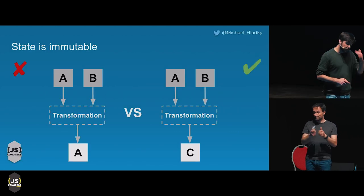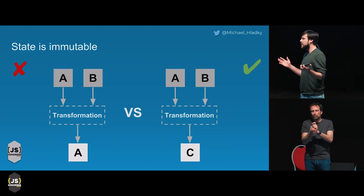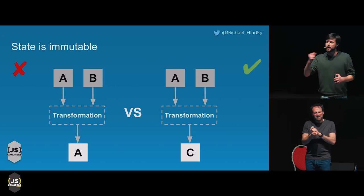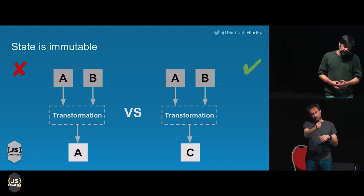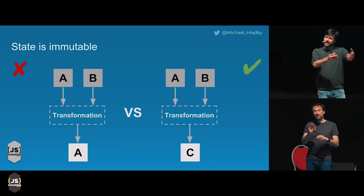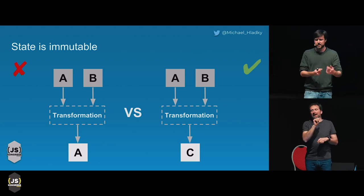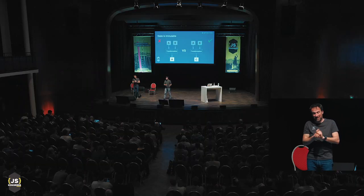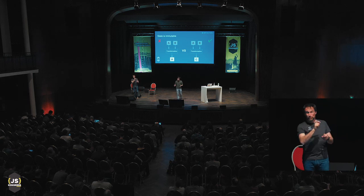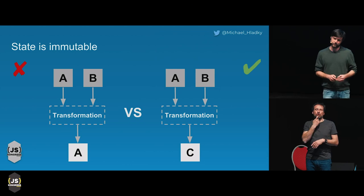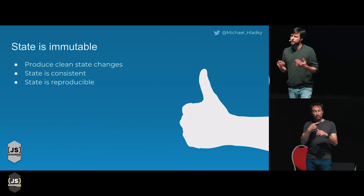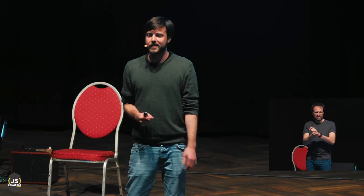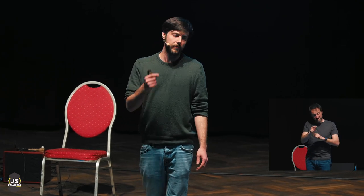State is immutable. What does immutability mean? Think about a function that does some transformation to your input properties. On the left side you have a function that mutates A — it takes A, mutates it, and returns the same reference. Compared to the right solution: if you want to change something in A, you create a new object and return C. Why should you do this? You can produce clean state changes if your data is immutable. Your state will be consistent and it also helps you keep your state reproducible.